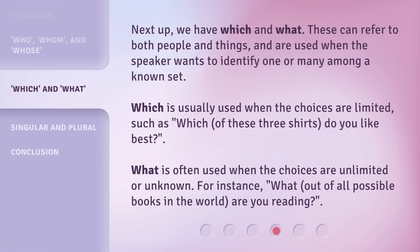Next up, we have Which and What. These can refer to both people and things, and are used when the speaker wants to identify one or many among a known set. Which is usually used when the choices are limited, such as, 'Which of these three shirts do you like best?' What is often used when the choices are unlimited or unknown. For instance, 'What, out of all possible books in the world, are you reading?'